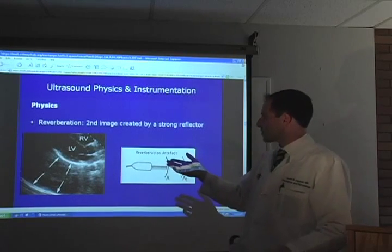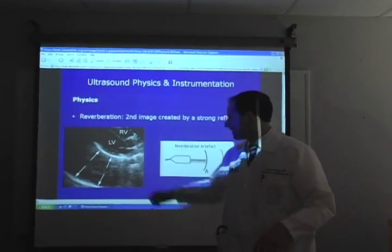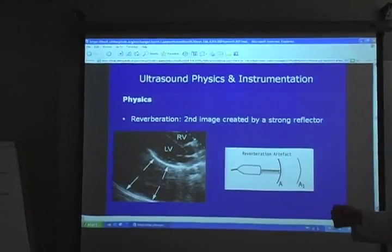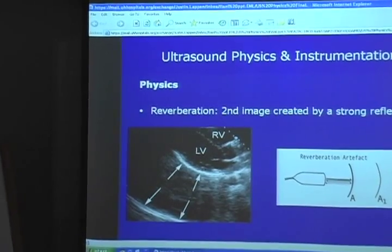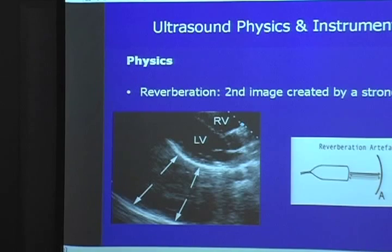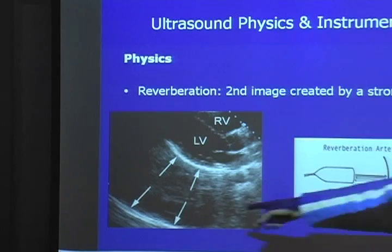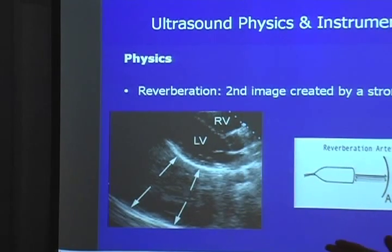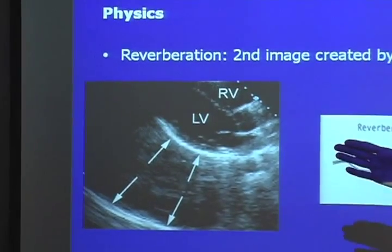This is a good example of reverberation on a cardiac echo showing LV and RV. The myocardium is echogenic and a very strong reflector, which creates an artifact image further down on the screen. The artifact almost looks like the same picture as the object being imaged. What's happening is that sound waves are sent out to image an object, and because it's such a strong reflector, they reflect back and then re-reflect off the probe to an area still within imaging range.